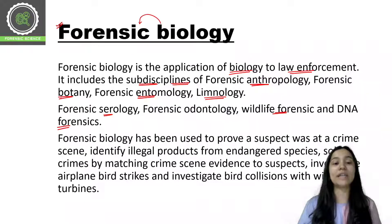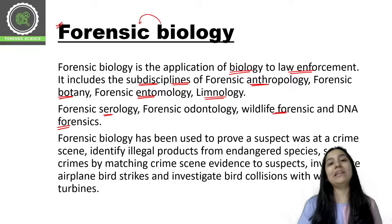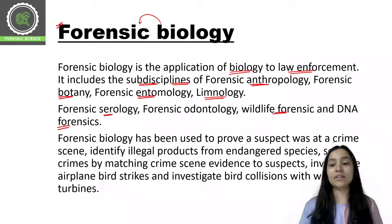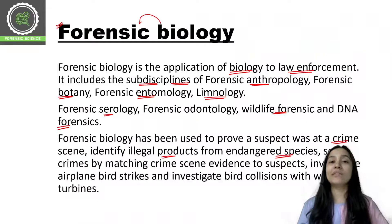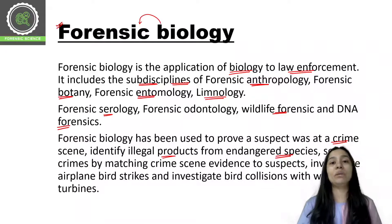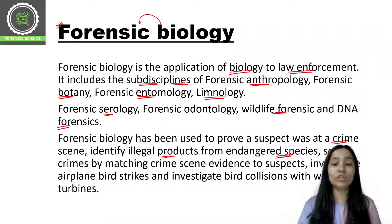Forensic biology has been used to prove a suspect was at a crime scene. We have biological evidence, chemical evidence, and physical evidence — every type of evidence is used to prove that some suspect was at a crime scene. But when we talk about forensic biology, we are using biological things to prove if a suspect was there at a crime scene or not. We can also identify illegal products from endangered species, whose skin is sold in the dark market at very high prices. People kill those animals for financial gain, and forensic biology helps identify those illegal products.